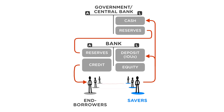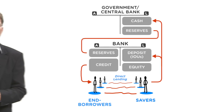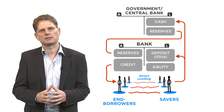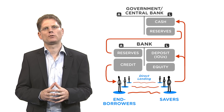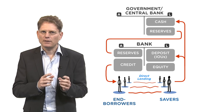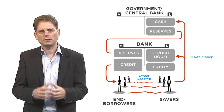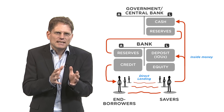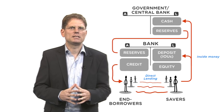In addition, savers can also directly lend to end borrowers. However, direct lending is more risky for two reasons. First, savers cannot diversify as well as banks. Second, banks are better at enforcing repayment from end borrowers. Therefore, direct lending is much more risky compared to holding inside money. Furthermore, standardization of inside money allows netting, which is not the case for direct lending claims, since the default risk might differ from end borrower to end borrower.